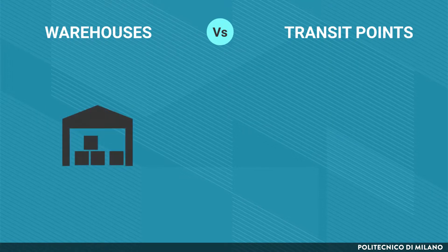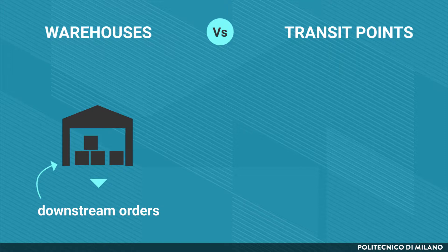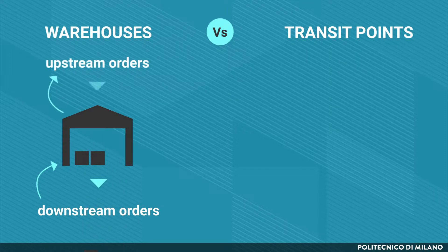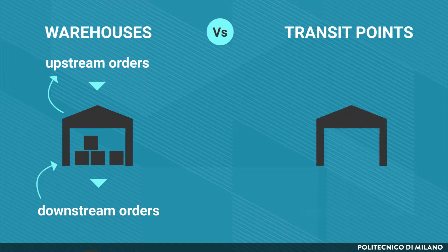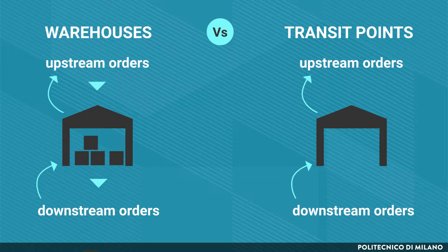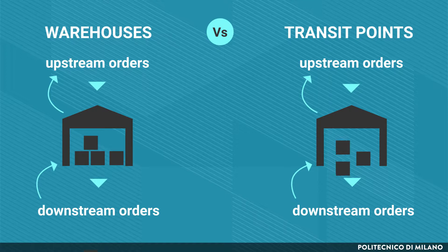In warehouses, orders from downstream are fulfilled by using inventories. Upstream orders aim at replenishing the inventories in the warehouse. In transit points, orders from downstream are sent straight to upstream. Orders are fulfilled upstream, but they are delivered and sorted through the transit point.